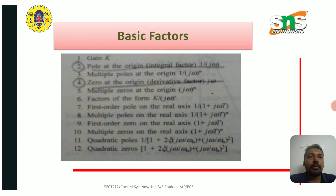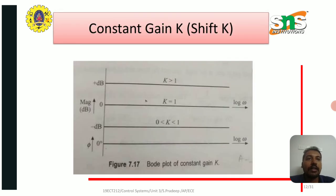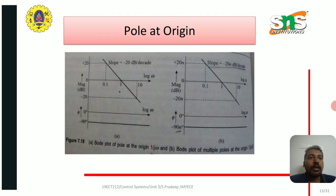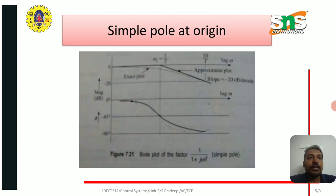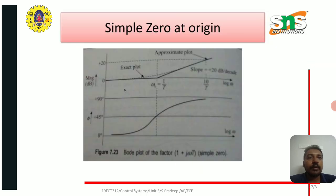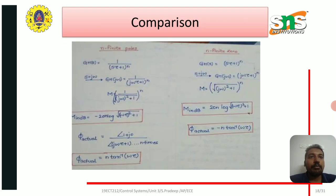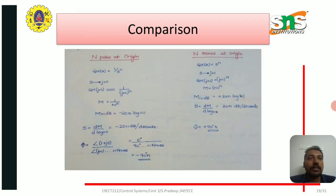The basic factors include gain, pole at the origin, multiple poles at the origin, and zero at the origin. The constant gain shift is given in the diagram, the pole at origin is shown in the next slide, the zero at origin and simple pole are also shown in their respective figures. A comparison between n finite poles and n finite zeros, and between n poles at origin and n zeros at origin, is also provided.